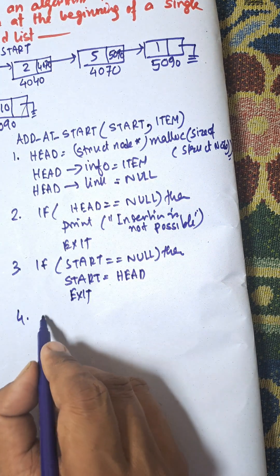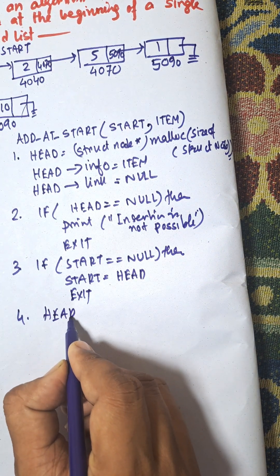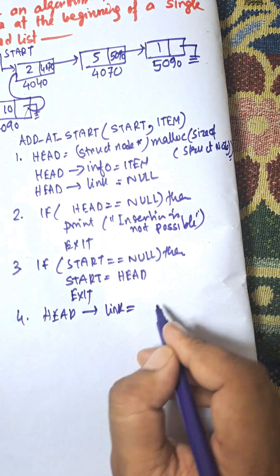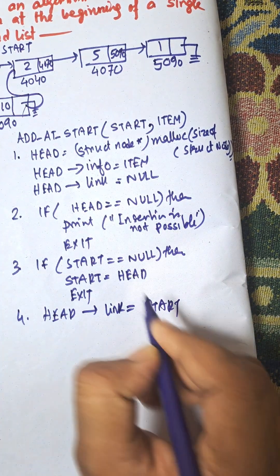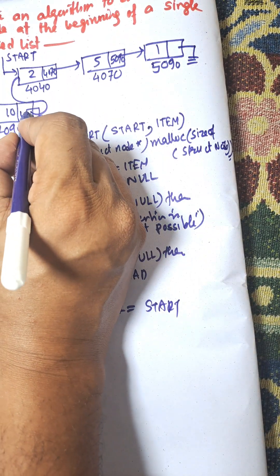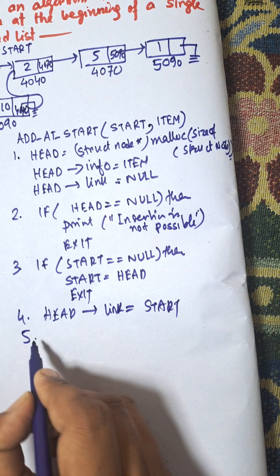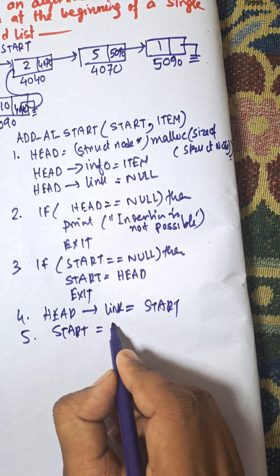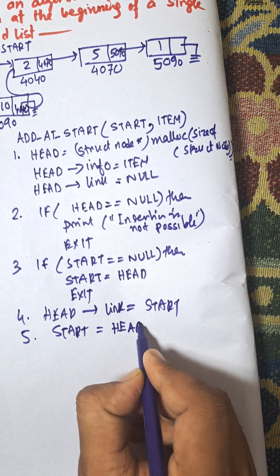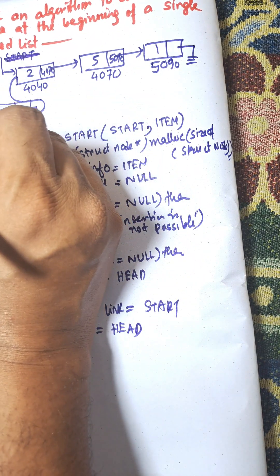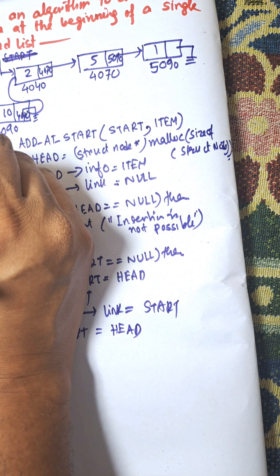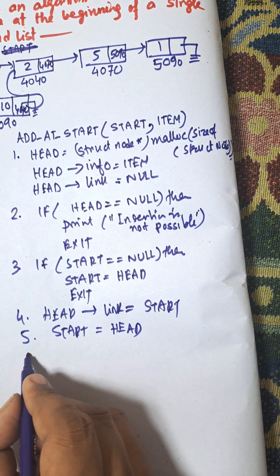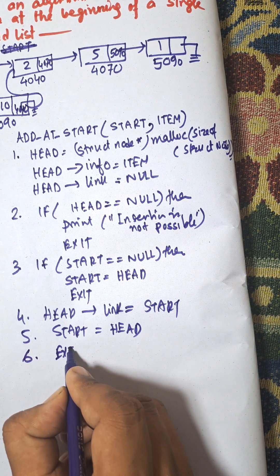Step 4: Connect the new node — set head->link equal to start, so it connects to the starting address 4040. Step 5: Set start equal to head, moving the start pointer to the new node's location. Step 6: Exit.